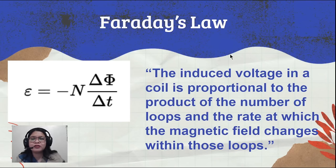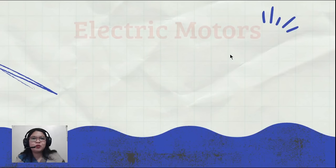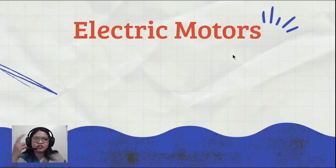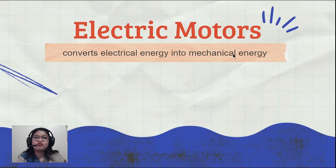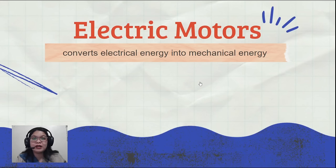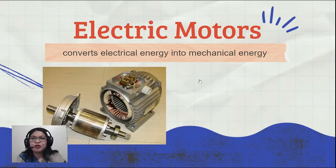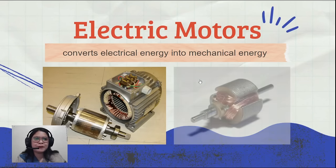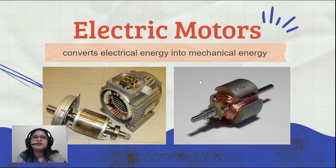Let's go now to the applications of electromagnets and electromagnetic induction. Let's start with electric motors. An electric motor is a device that converts electrical energy into mechanical energy. For example, there is an electric motor inside an electric fan. This is what an electric motor looks like.